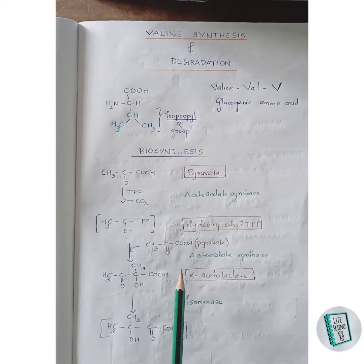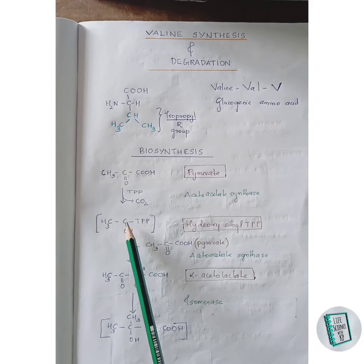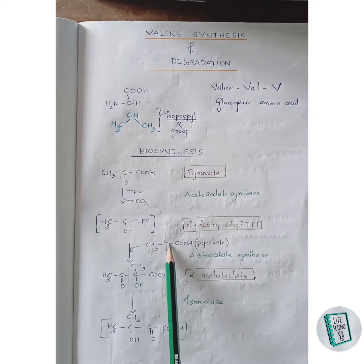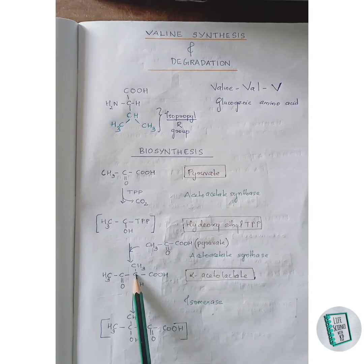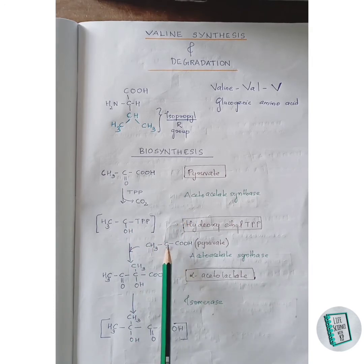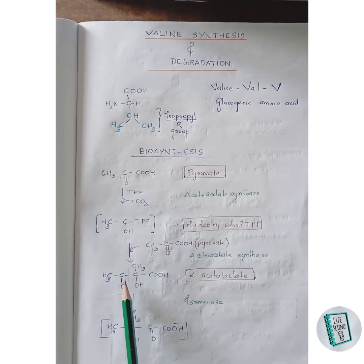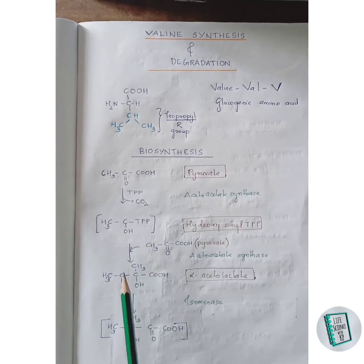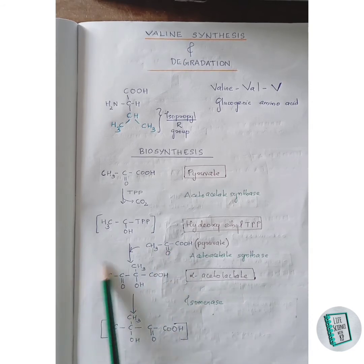In the second step, hydroxyethyl-TPP gets converted to alpha-acetyl lactate with the help of a pyruvate molecule. This carbon gets attached to the keto group carbon of pyruvate. The TPP is removed, this carbon attaches to that carbon, and the oxygen accepts a hydrogen to form an OH group. One carbon has a double-bond oxygen and the other has an OH group, forming alpha-acetyl lactate.